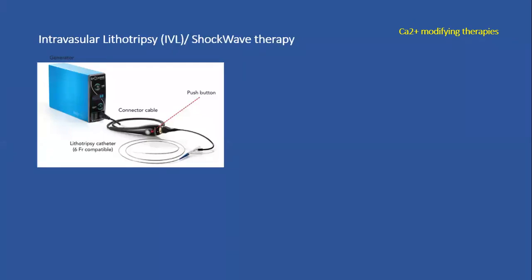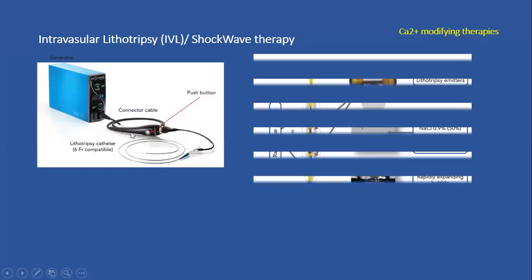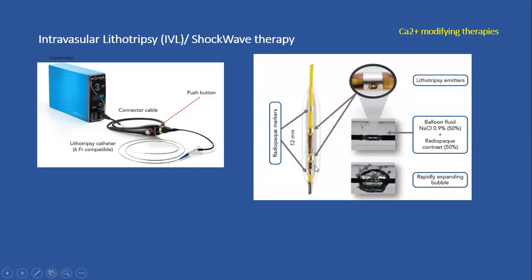Let's move on to IVL — intravascular lithotripsy, or shockwave therapy. It's a sleek device with lithotripsy emitters inside a balloon containing the usual saline and contrast mix. Lithotripsy energy is delivered, creating small bubbles and acoustic pressure waves that travel freely through soft tissue but cause breakage when hitting calcium.